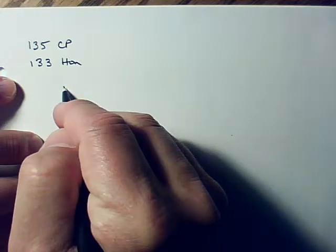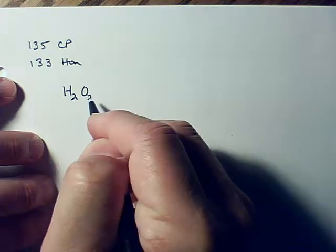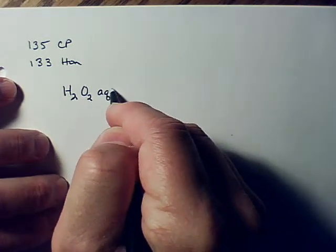So dihydrogen means I have H2. Dioxide means I have O2. And it says it's in an aqueous solution, so that means we're going to label this as being AQ.